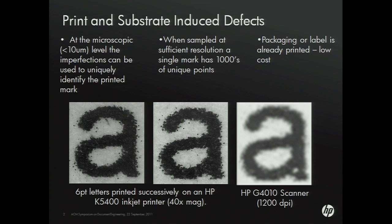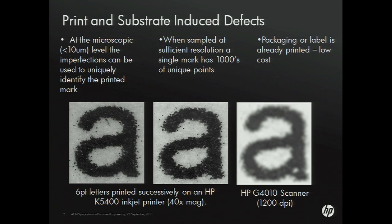We show here with these high-resolution images — this is particularly striking because it's some very small inkjet characters, only six-point text — if you look at those, you can see that each of them has considerable differences, which are due to the way the ink splatters and the substrate you're printing on. This is true of any print type across the board. Everything, if you look at it in enough detail, has enough there to get a unique representation of it.